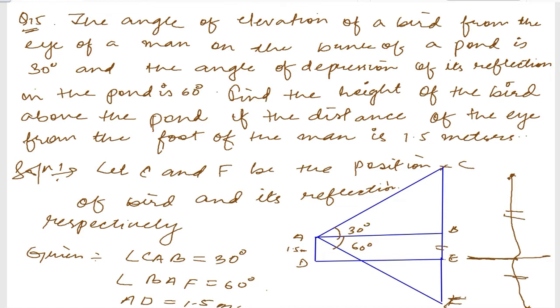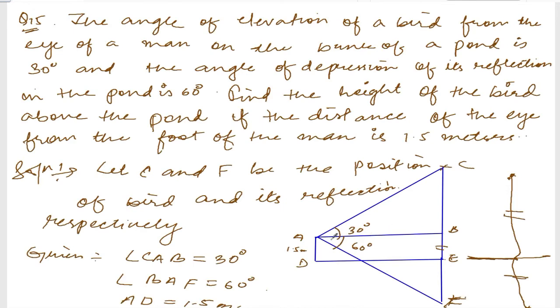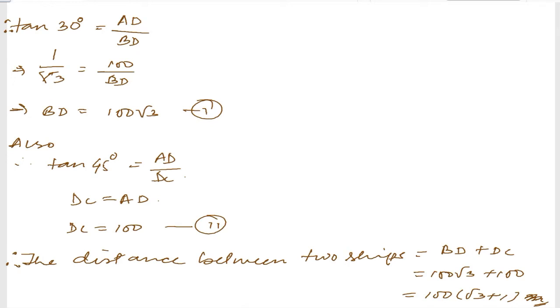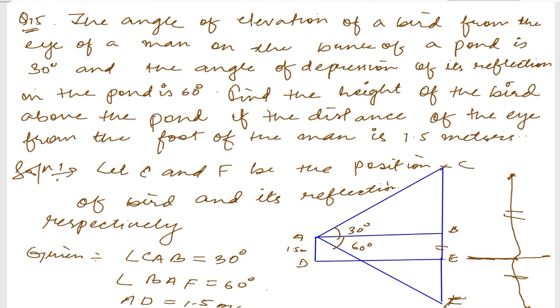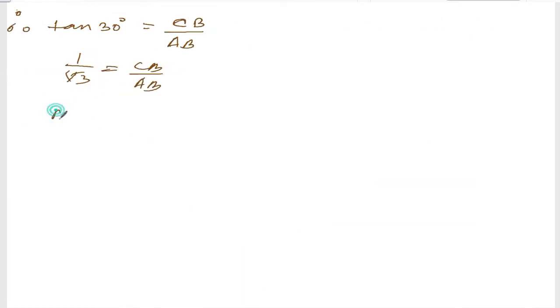First, let us find tan(30°). Therefore, tan(30°) is equal to CB divided by AB. Tan(30°) is 1 divided by root 3, so 1 over root 3 equals CB over AB. Transferring AB, we get AB is equal to root 3 times CB. This is equation number 1.